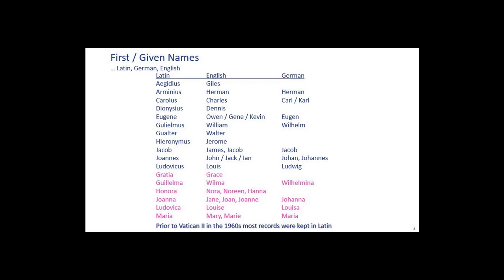Gulielmus is William. Walter would be Walter. Hieronymus would be Jerome. Jacob is a difficult one to translate — in English it's Jacob, but if you're dealing with the Irish it's probably James; in German it would be Jakob. Johannes in English would be John, it could be Jack, or in the Gaelic form Ian. In German it could be Johann or Johannes. Ludovicus would be Louis or Ludwig. For women's names, Gratia would be Grace. Wilhelma would be Wilma or Wilhelmina, depending if they're Irish or German.